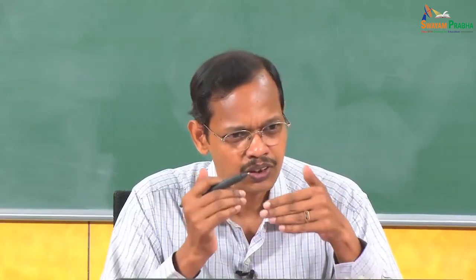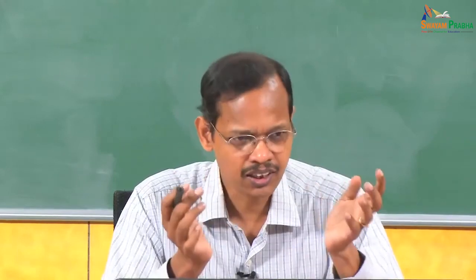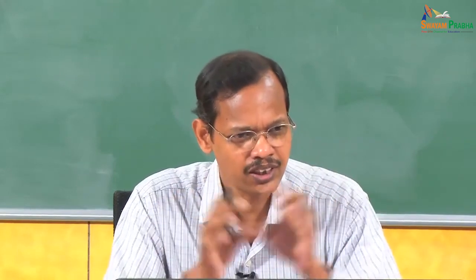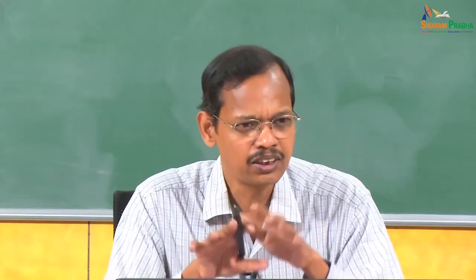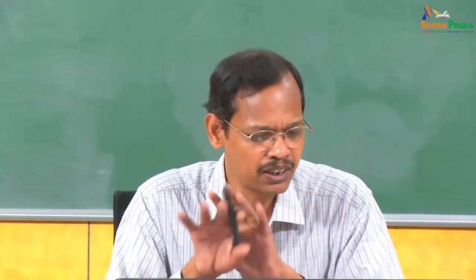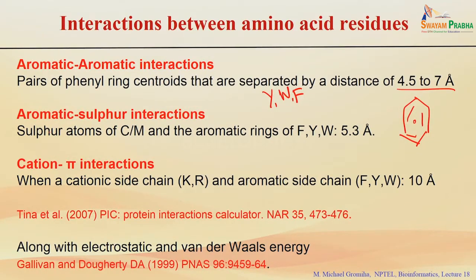Likewise, aromatic-sulfur interactions involve the sulfur atoms of cysteine and methionine — both residues have sulfur atoms. When we consider disulfide bonds, we consider only cysteine, but for aromatic-sulfur interactions we take both cysteine and methionine along with the aromatic rings, and use a distance cutoff of 5.3 Ångström.